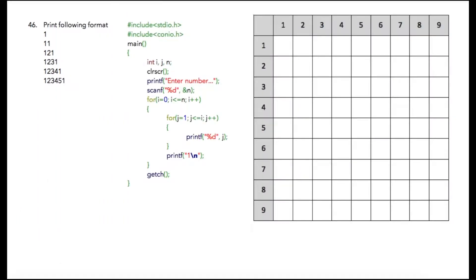This is a very simple program if you just notice a pattern over here — this pattern we have already completed. At the end of this pattern we are just adding one after it on each row. But notice that on a single row no part of the first section is there, so we need to make a provision that printing of this section will somehow start from the second iteration, not the first.